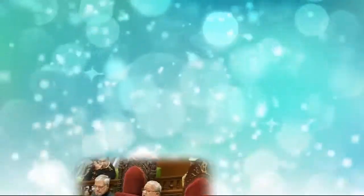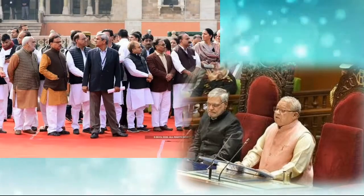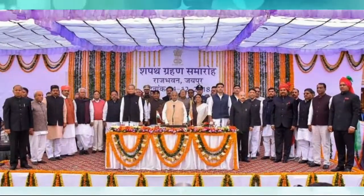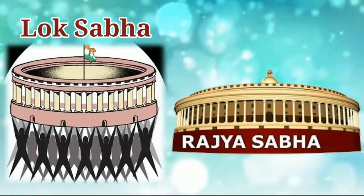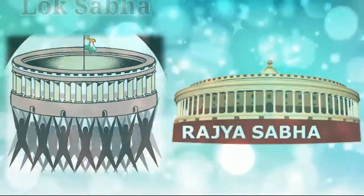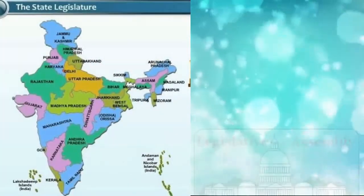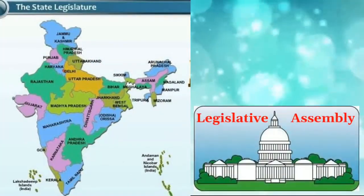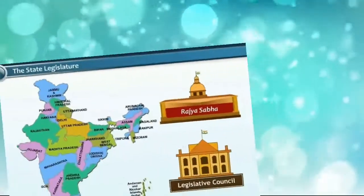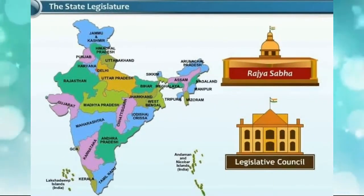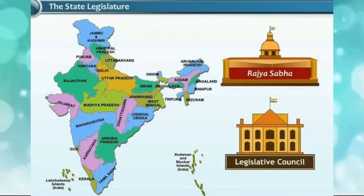On the advice of the Chief Minister, the Governor appoints other ministers and together they form the Council of Ministers. Every state has a Legislature consisting of one House or two Houses. Some states of India have a Legislative Assembly like the Lok Sabha of the Parliament, while some states have a Legislative Council.